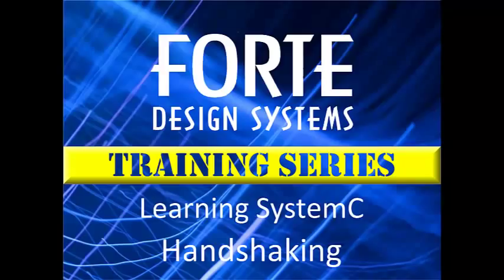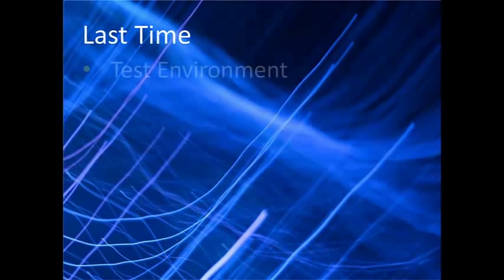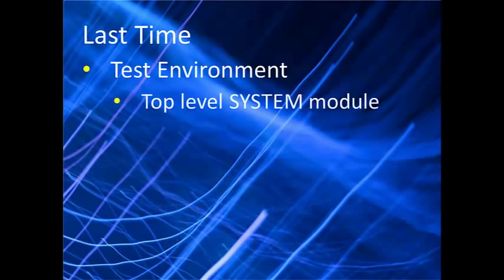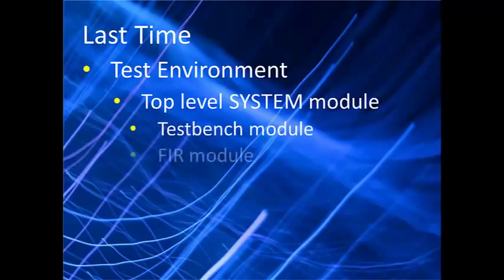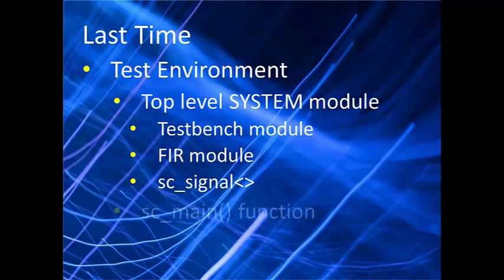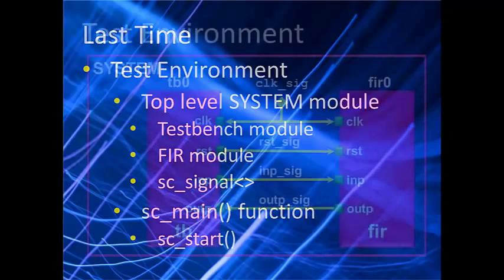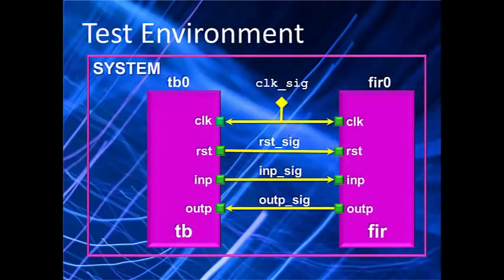Hello and welcome to the next installment of the SystemC video training series from Forte Design Systems. Today's video deals with establishing a handshake protocol between modules. Last time we built a top-level system module that instantiated a test bench alongside a FUR module and connected them with SC signals. That system module was instanced in a file called main.cc where we defined an SC_main function that runs the SystemC simulation with the SC_start function. Here's a visual reminder of what we built, showing the test bench and FUR modules connected with signals.